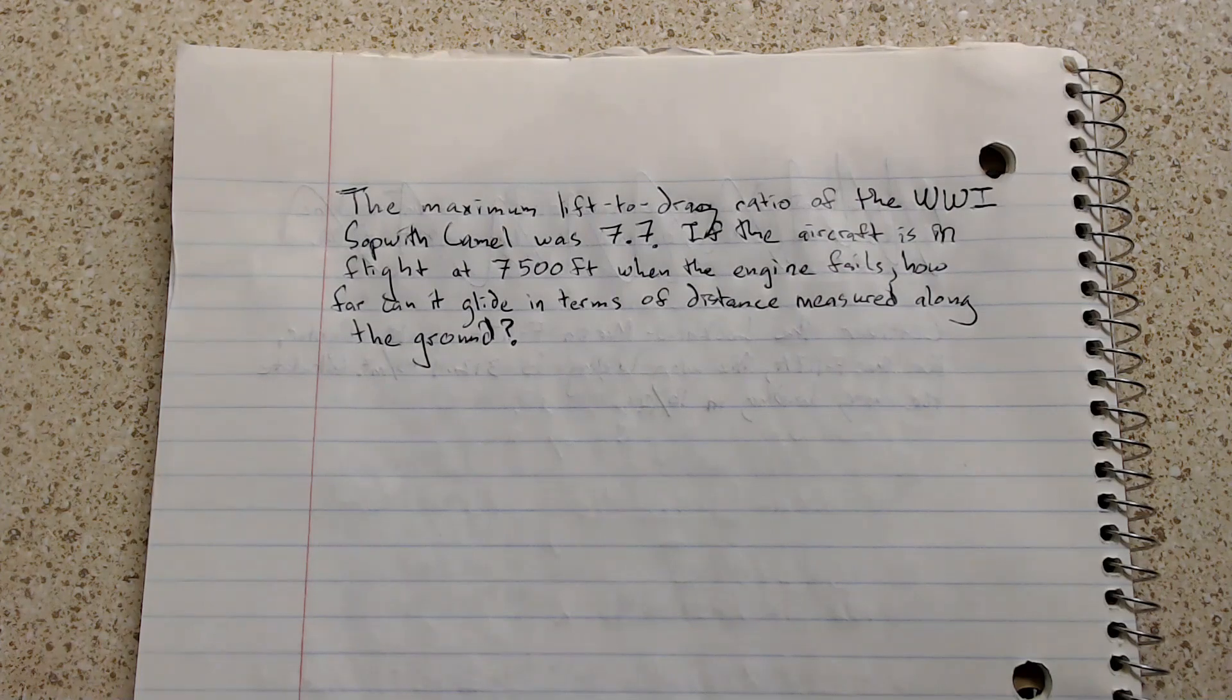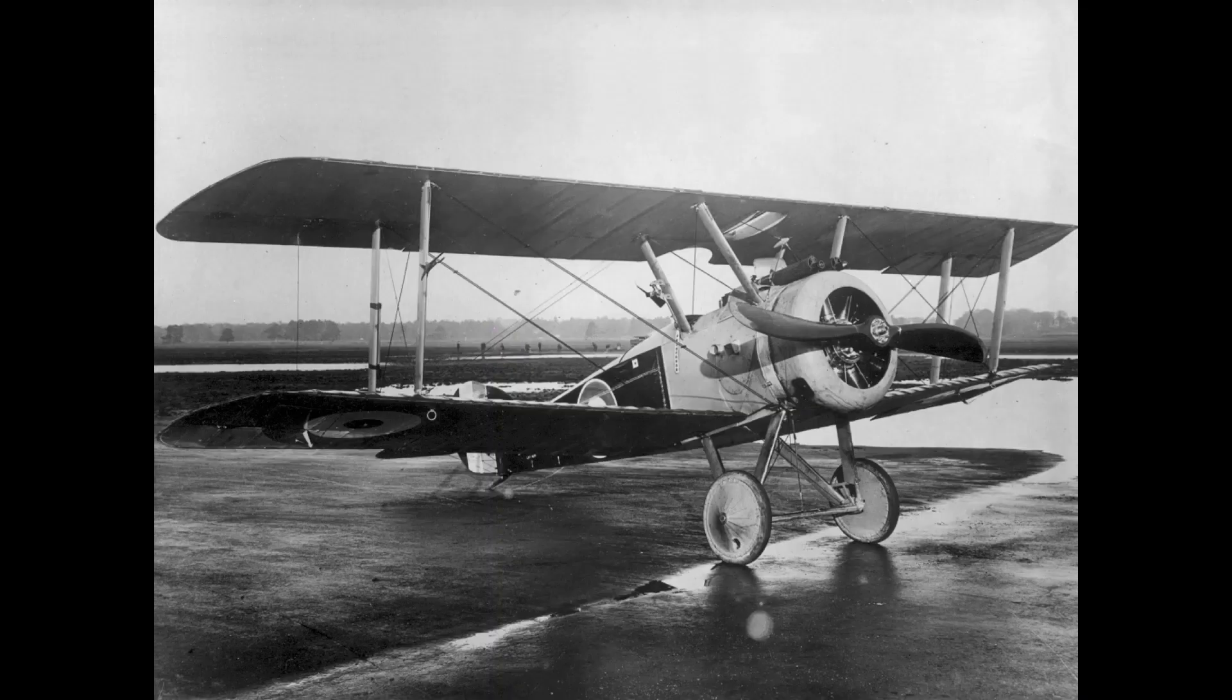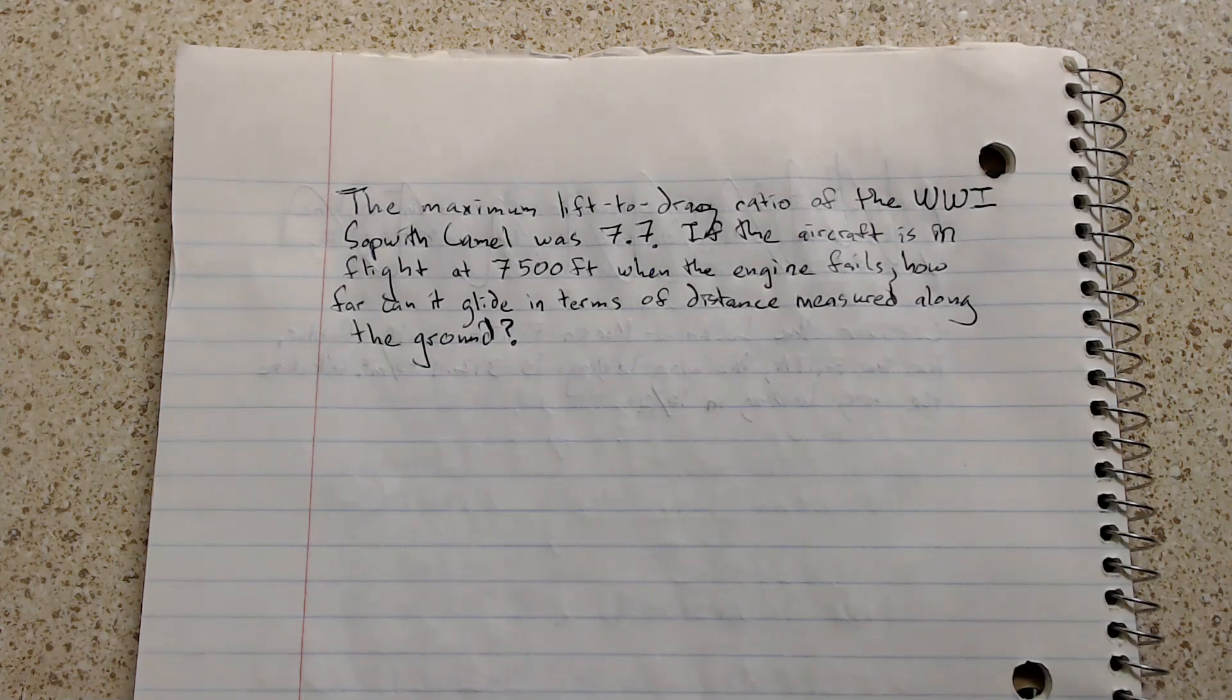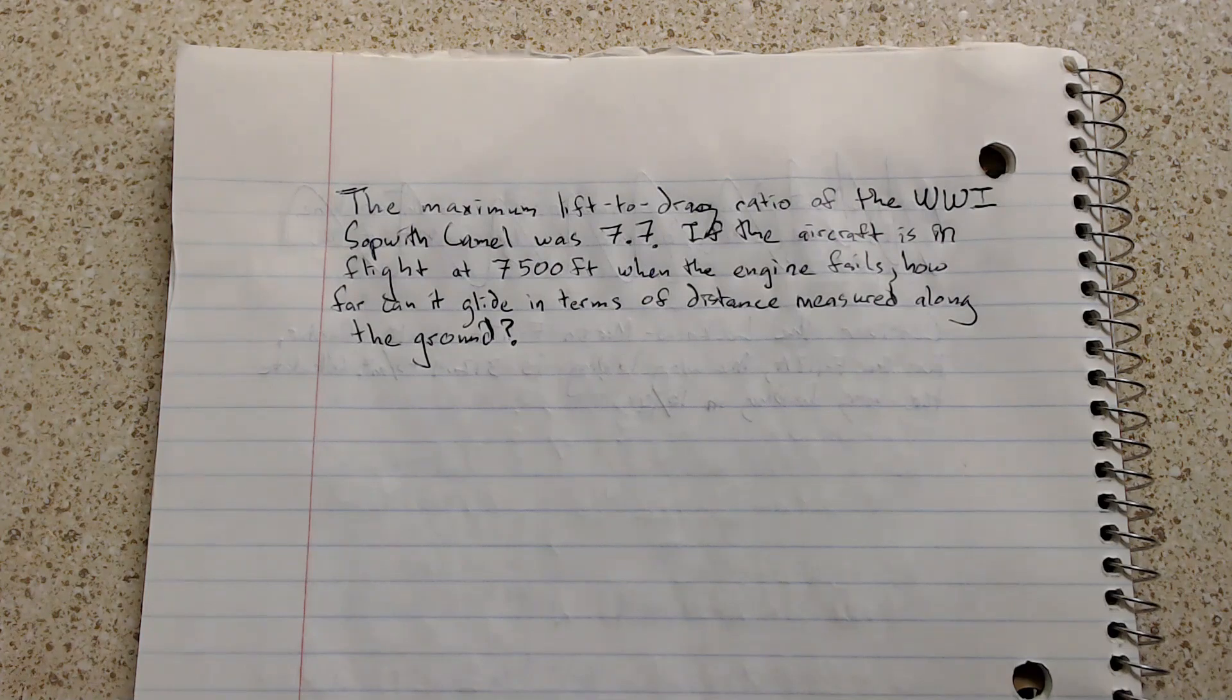The maximum lift-to-drag ratio of the World War I Camel was 7.7. If the aircraft is in flight at 7,500 feet when the engine fails, how far can it glide in terms of distance measured along the ground?